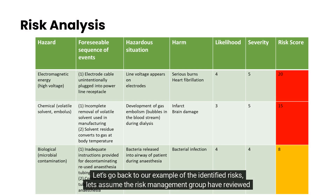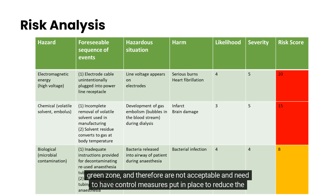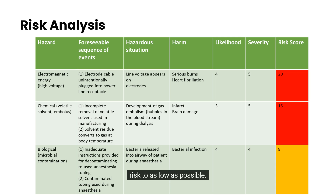Let's go back to our example of the identified risks. Assume the risk management group have reviewed all the potential risks in terms of their severity and considered the likelihood of them occurring. They would then see that the three risks identified, once risk scores have been applied, are not in the green zone, and therefore are not acceptable and need to have control measures put in place to reduce the risk to as low as possible.